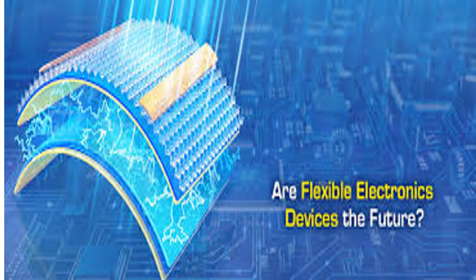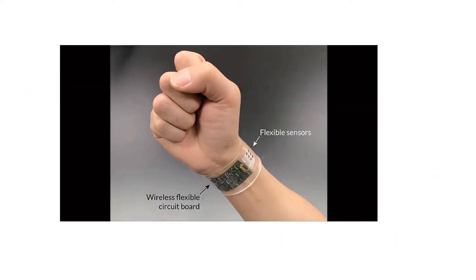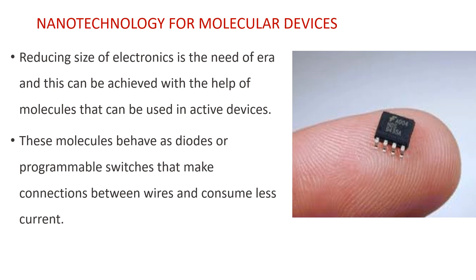Flexible electronics is a technology that allows you to build electronic circuits on flexible substrates, making them bendable and stretchable. Stretchable electronics or flexible electronics is likely to be the future of mobile electronics. Potential applications include wearable electronic devices, biomedical uses, compact portable devices, and robotic devices. In the future, it is likely that graphene will become a dominant material in flexible electronics. Graphene is an allotrope of carbon that has superb electrical conductivity, flexibility, and physical strength — an example being wireless flexible circuit boards with flexible sensors. Reducing the size of electronics is the need of the era, and this can be achieved with the help of molecules that can be used in active devices.